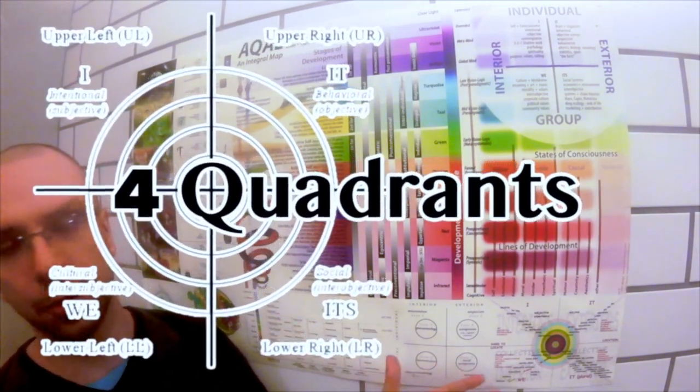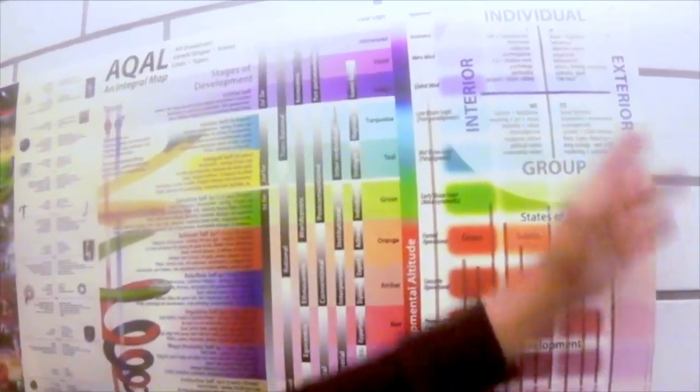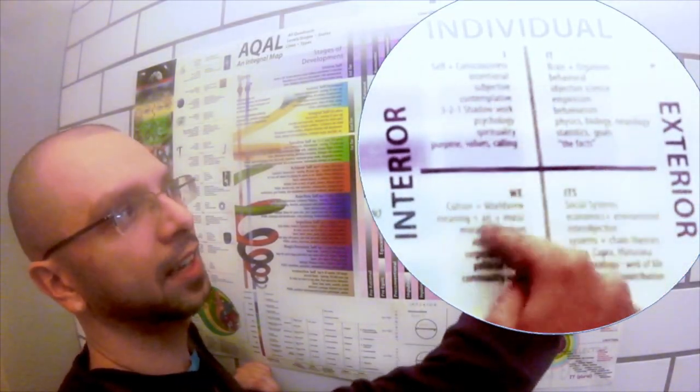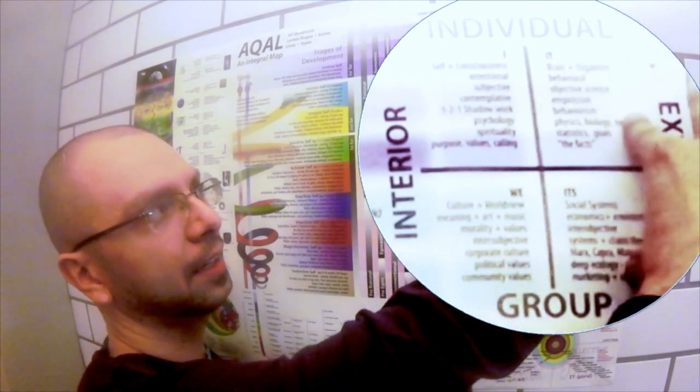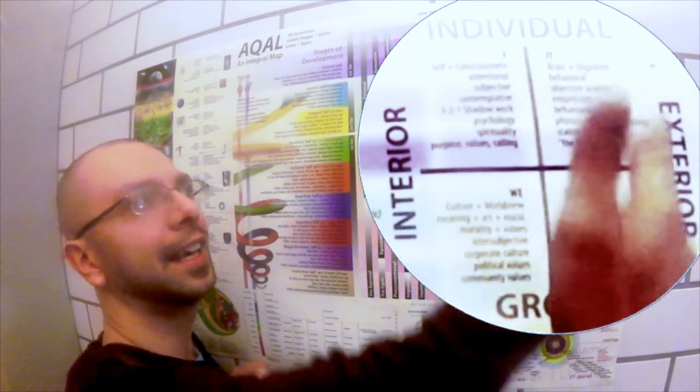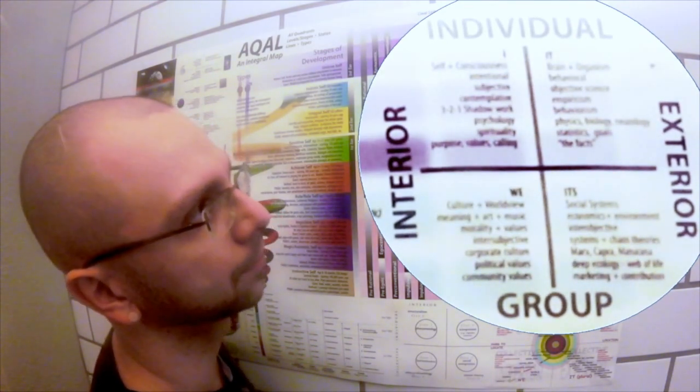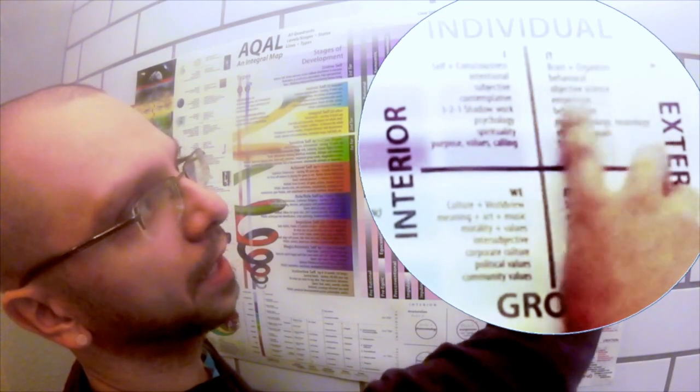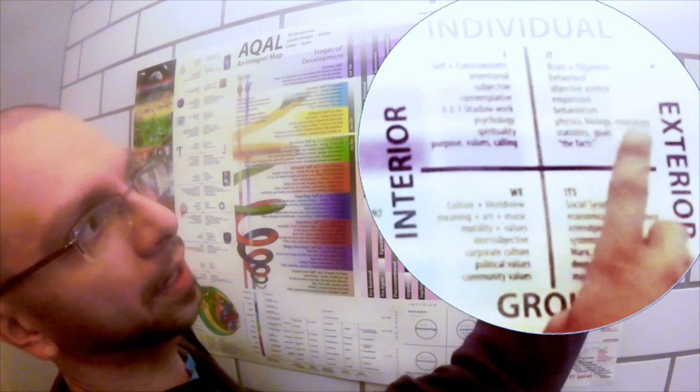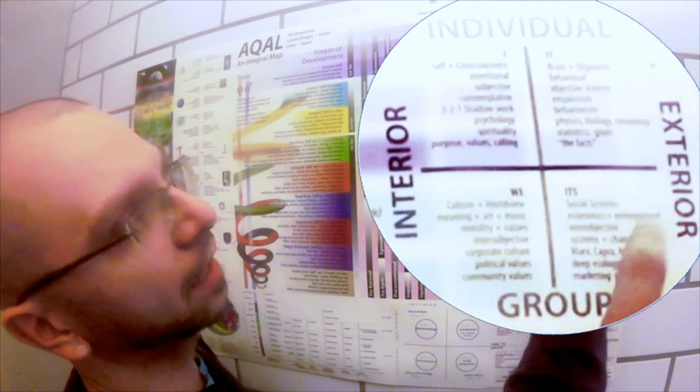So let's start by just introducing the quadrants. What you have are interiors and exteriors, individuals and groups. This includes first, second, and third person perspectives. We talk about this in terms of language like I, we, it, and its. So it and its is third person. It is brains and organisms, behavior, objective science, empiricism, behaviorism, physics, biology, psychology, neurology, statistics, goals, the facts. That's it, it singular.